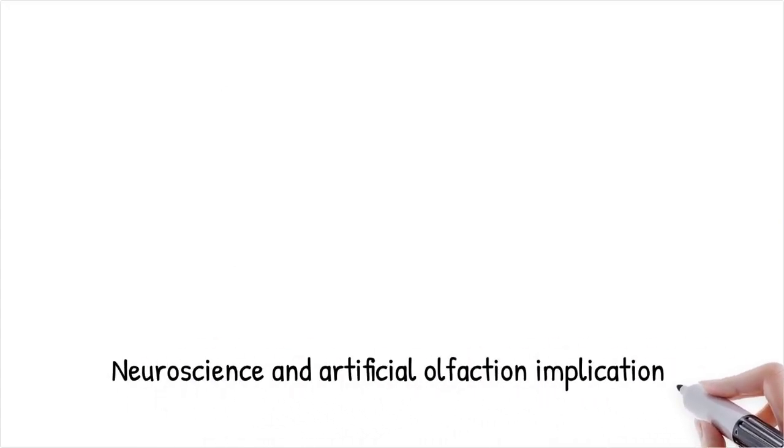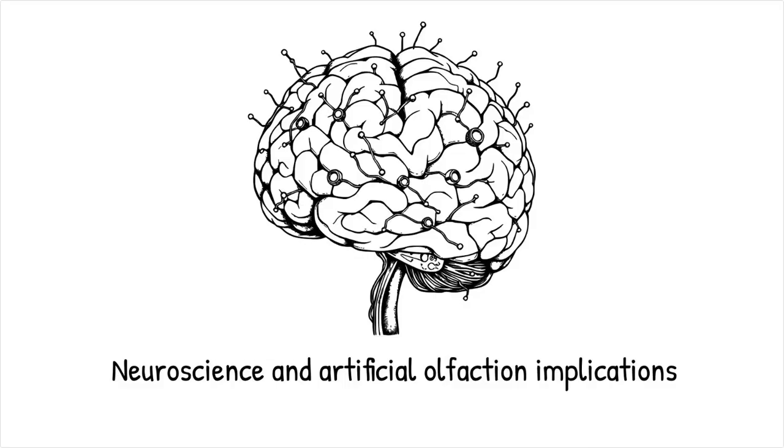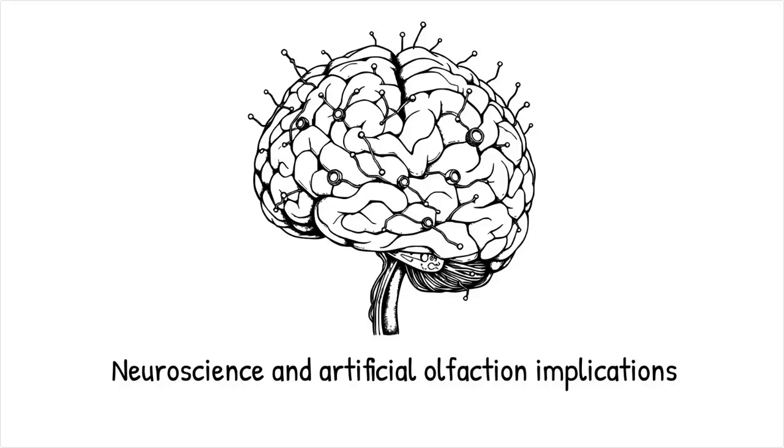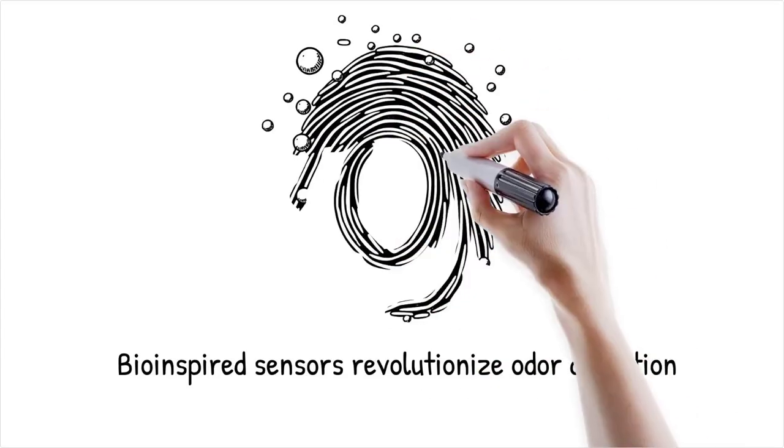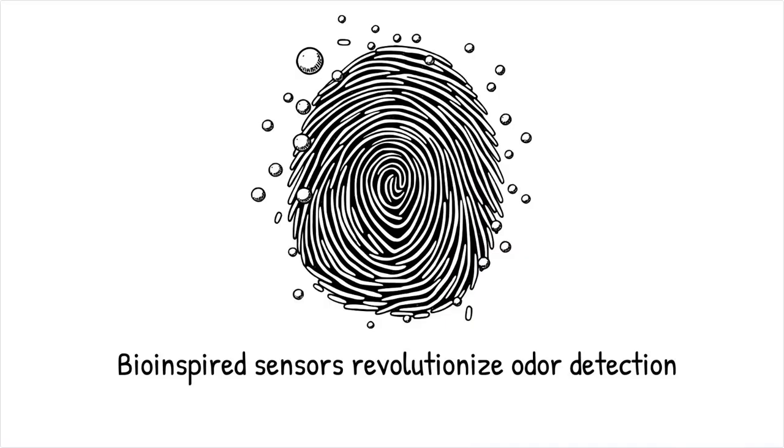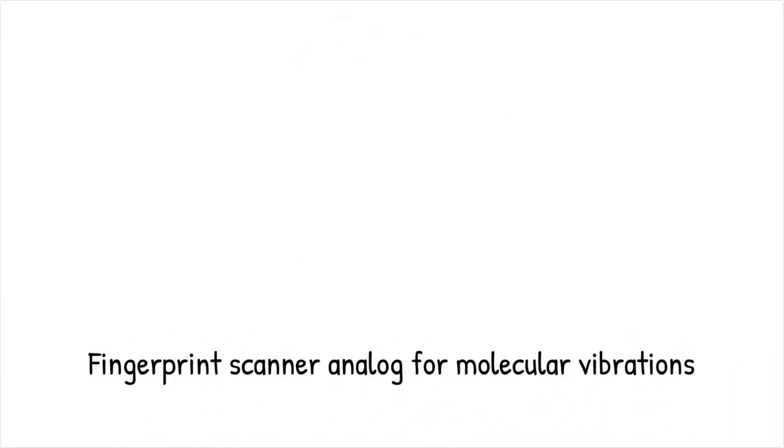If quantum tunneling underlies smell, then neural representations of odor must encode vibrational information, suggesting new models for sensory coding in the brain. Artificial olfaction devices, electronic noses, could adopt inelastic tunneling sensors to achieve human-like discrimination of complex odorants. Such bio-inspired sensors would surpass current metal oxide arrays by leveraging resonance-based selectivity. This quantum approach could revolutionize applications from environmental monitoring to medical diagnostics. Prototype tunneling junction sensors have demonstrated the ability to distinguish closely related fragrance molecules with high fidelity. It is like building a fingerprint scanner that reads molecular vibrations instead of ridges, unlocking a new dimension of detection.